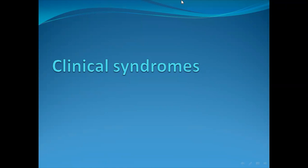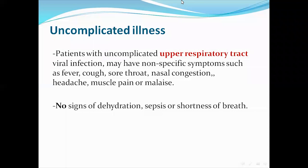The clinical syndromes of novel coronavirus can present with different clinical pictures, starting from simple upper respiratory tract infection up to respiratory failure, septic shock, and death. The first clinical syndrome is uncomplicated illness: a patient with upper respiratory tract viral infection may have non-specific symptoms such as fever, cough, sore throat, nasal congestion, headaches, muscle pain, or malaise, with no signs of dehydration, sepsis, or shortness of breath.